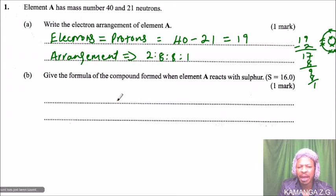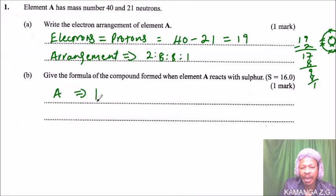What you need to know here is the valency of sulfur and what you have here. We have a valency for A that is 1. We are talking of valency. What it means is that in element A we lose 1 electron.